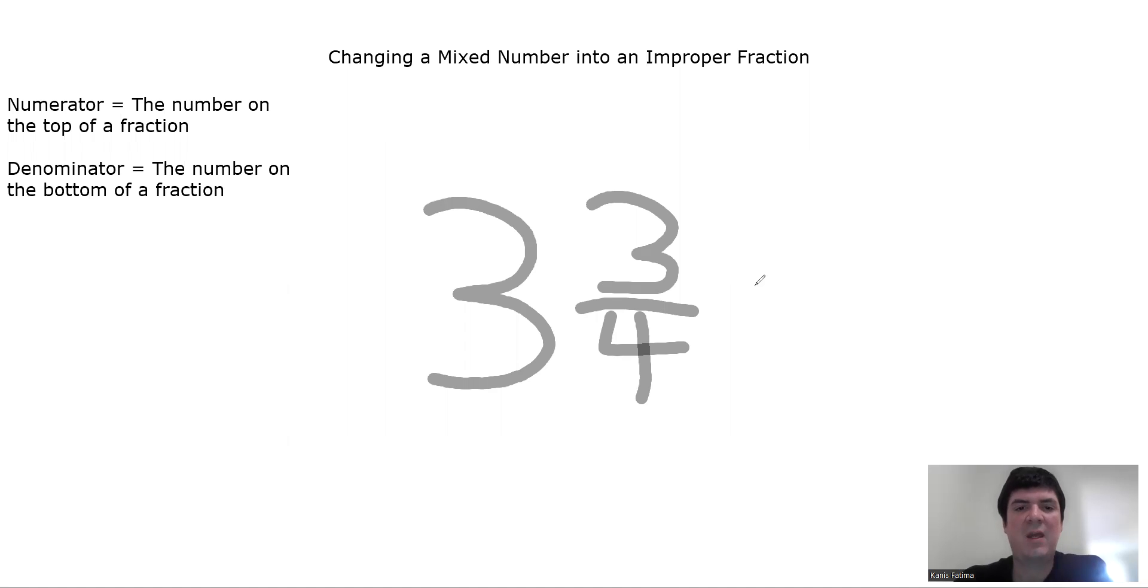Our first step is we're going to multiply our denominator by the whole number. So, our denominator is 4. I'm going to multiply that by 3, which is our whole number. 4 times 3 equals 12.